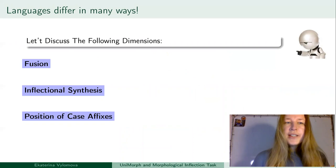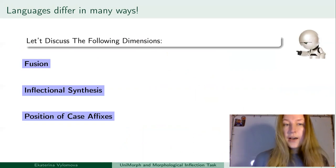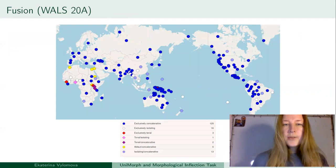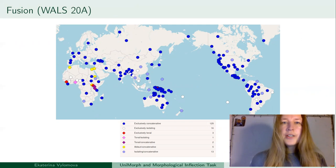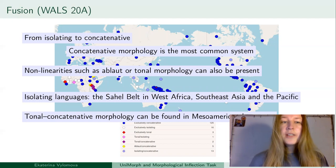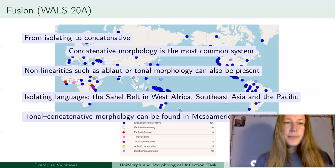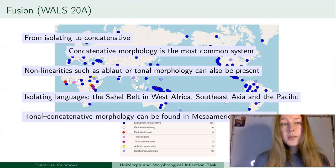I would like to discuss the following dimensions that are relevant to morphology: fusion, inflection or synthesis, and position of case affixes. If you look at WALS data, we see that in terms of fusion, languages may be isolating or concatenative, or they can also use tones. Concatenative morphology is the most common system, but non-linearity such as ablaut or tonal morphology can also be present.